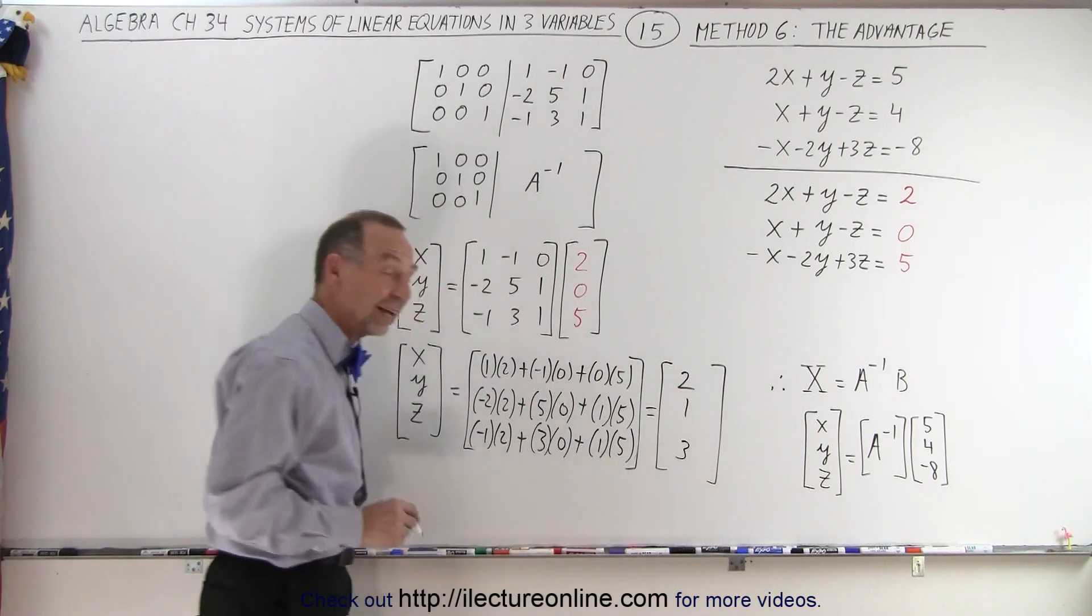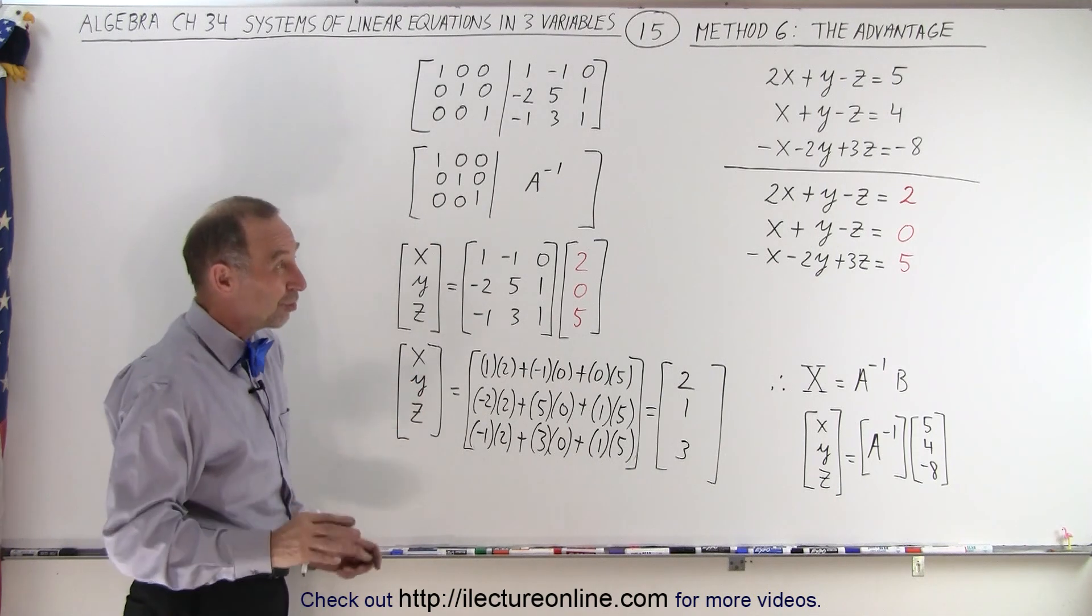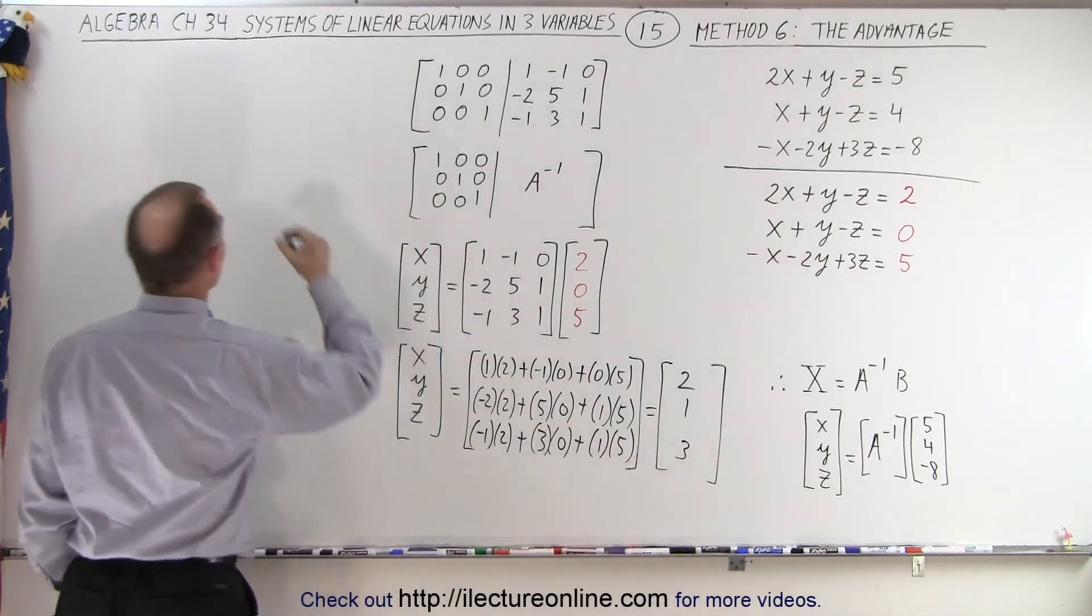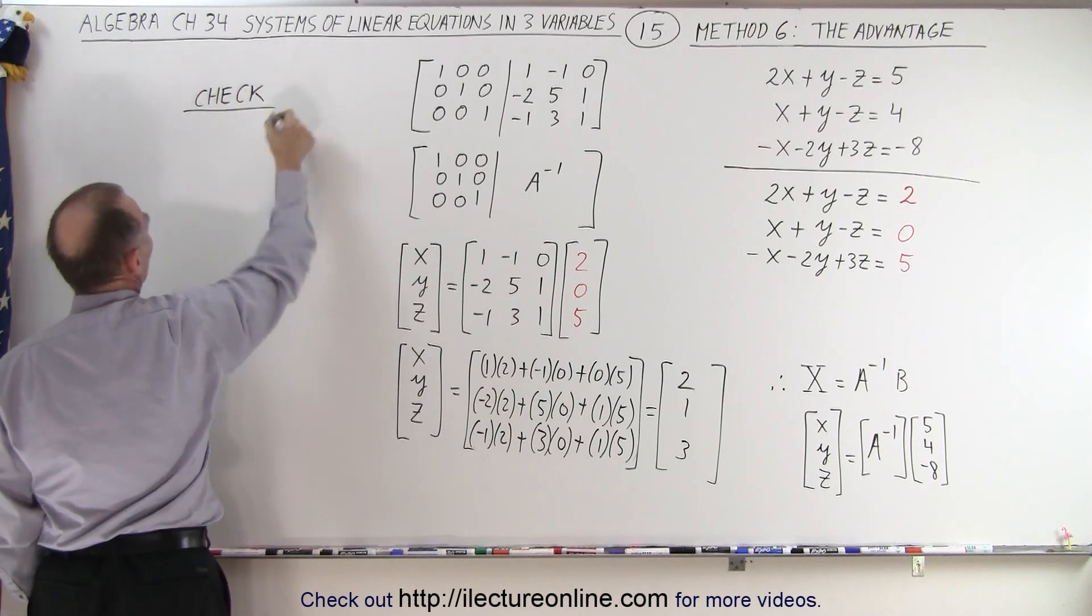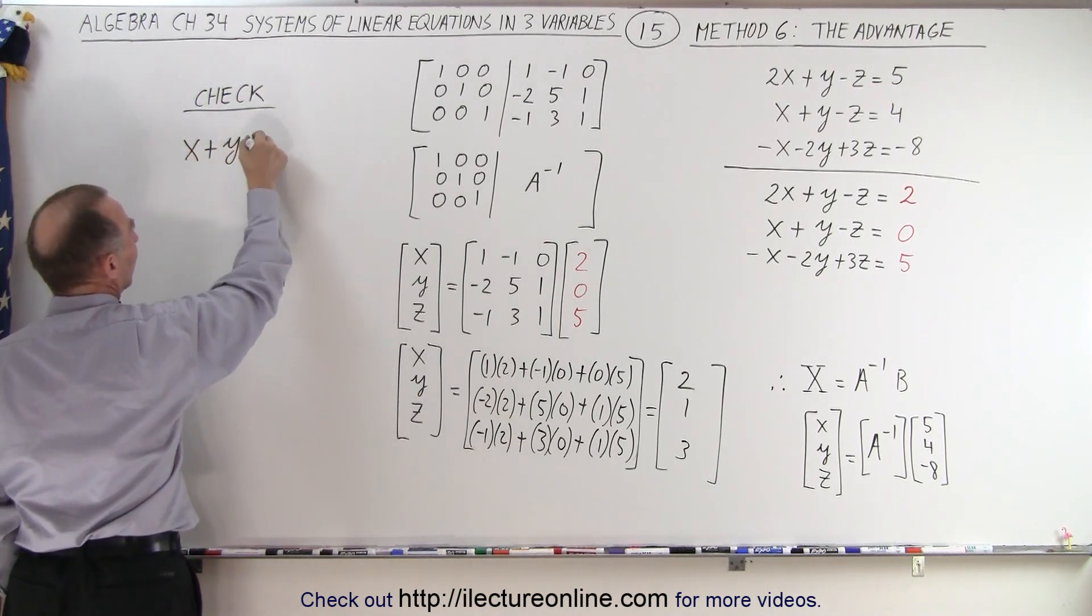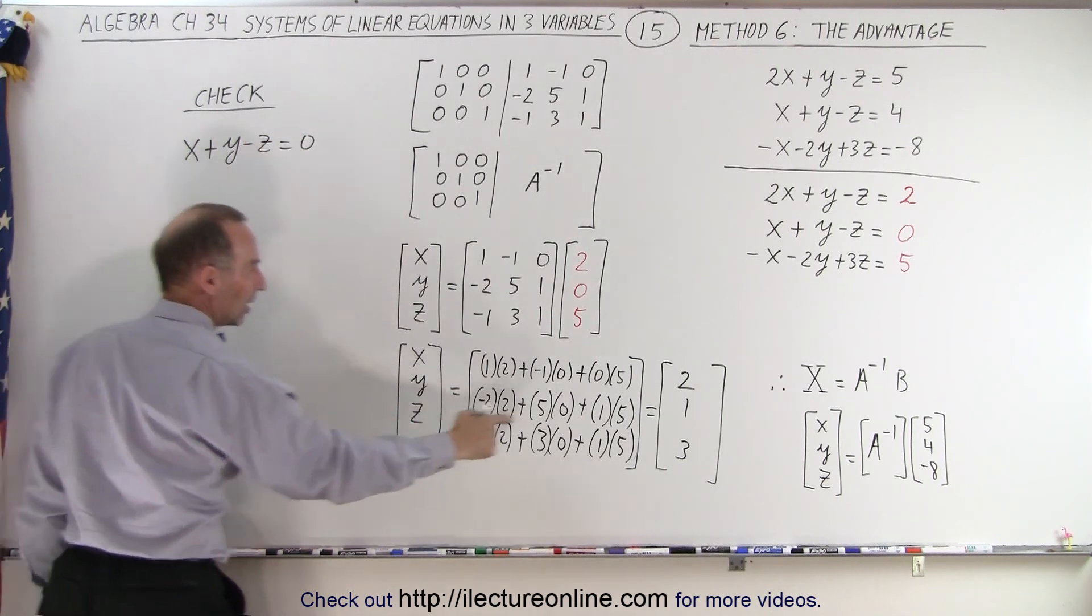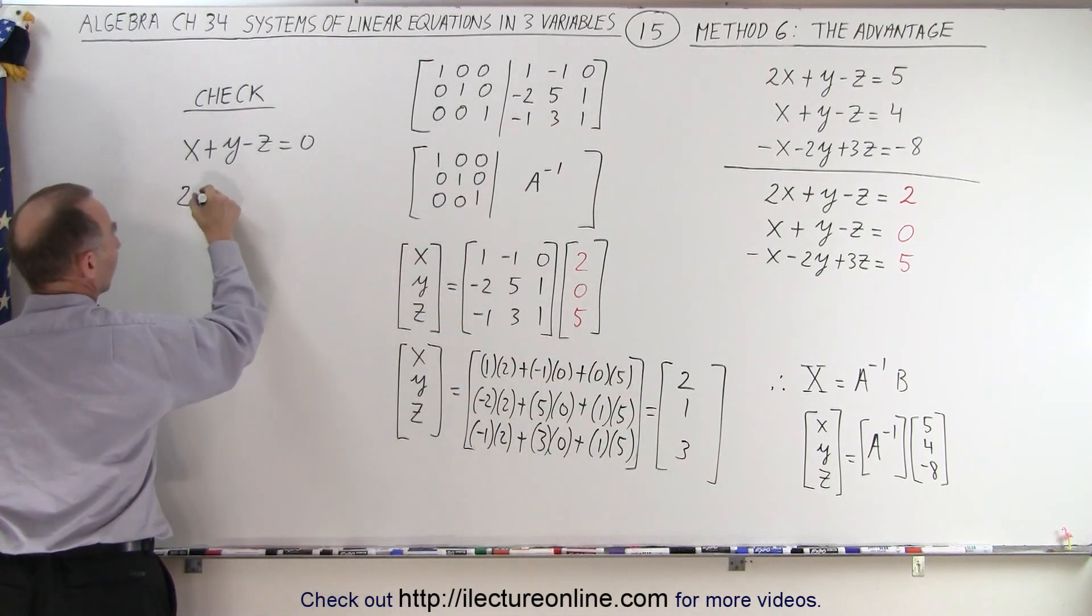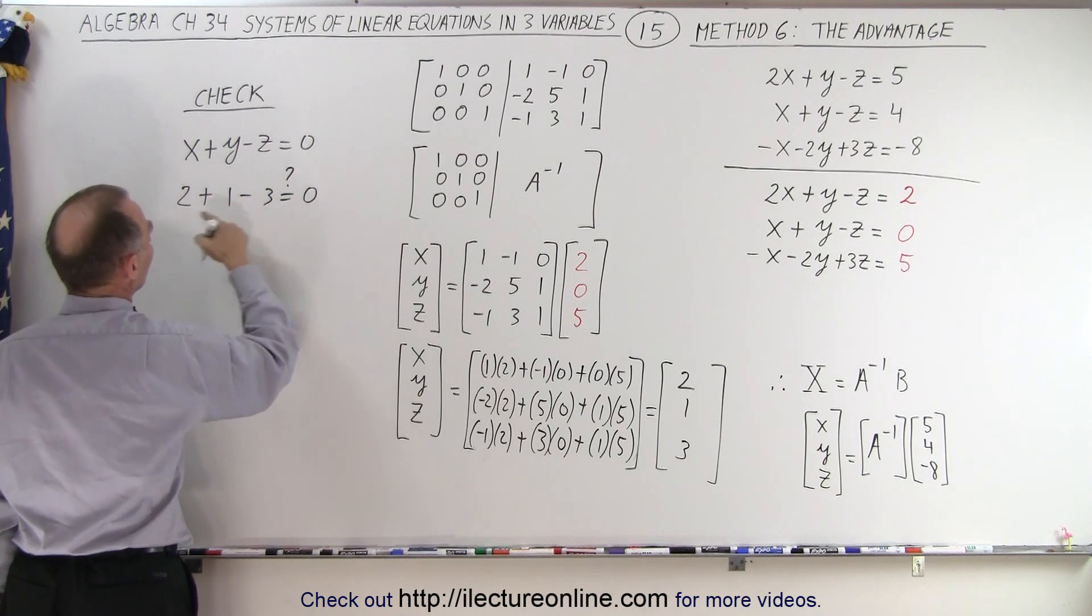Just make sure we did it correctly. Let's see if I get the right value when I take my equation to check. Let's take the middle equation. That looks like the easiest one to check with. So we start with the equation X plus Y minus Z is equal to 0. Plug in the values for X, Y, and Z. So X is 2 plus Y, which is 1, minus Z, which is 3. Is that indeed equal to 0?